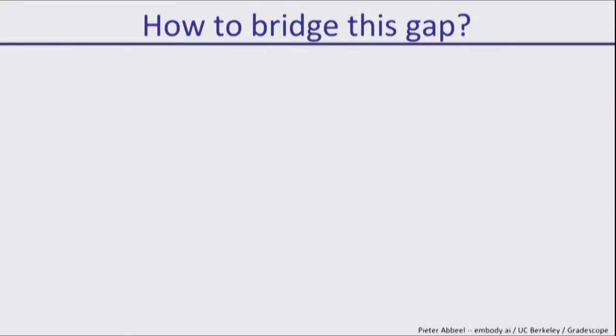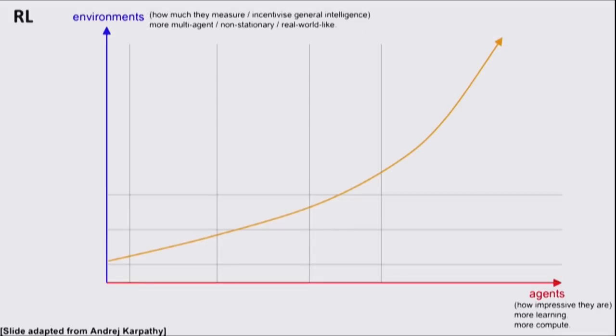The question is how we're going to bridge this gap. I'd like to take a step back. This is a slide adapted from Andrei Karpathy. On the horizontal axis we have the quality of agents, how much compute they're using. The vertical axis is the kind of environment they'll be faced with.